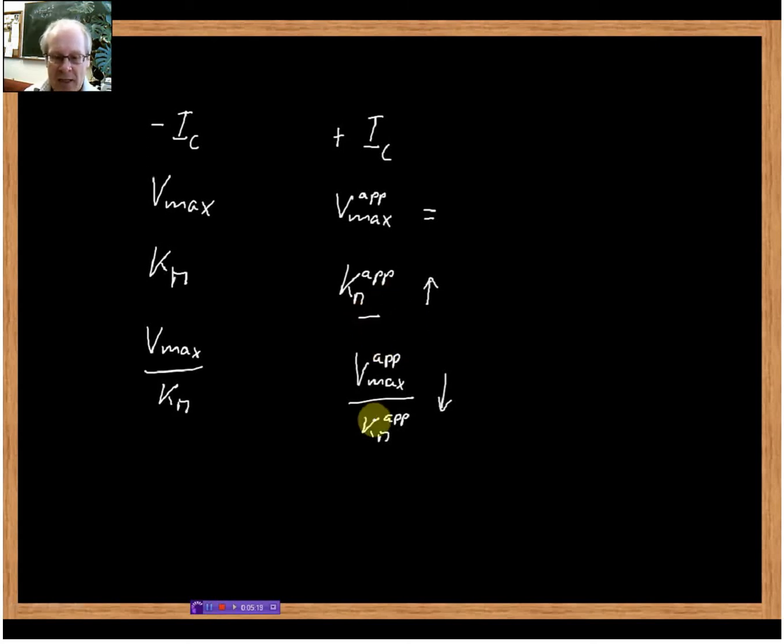We have basically two parameters that we can look at, and what we usually do is we look at this parameter. What we basically say is we measure the concentration of, or we use inhibitor concentrations, and we measure the corresponding Vmax up over KM up. The rationale is that the more inhibitor I use, the more this Vmax up over KM up will go down.